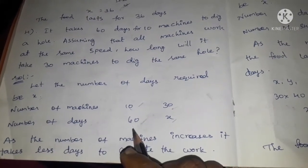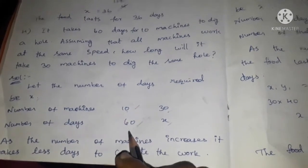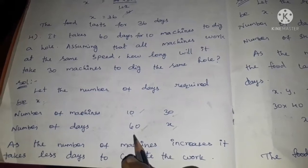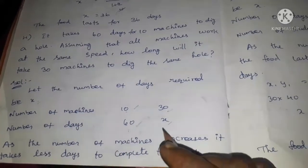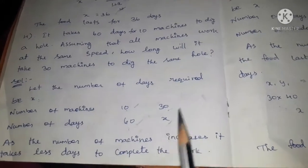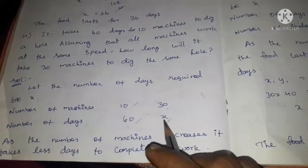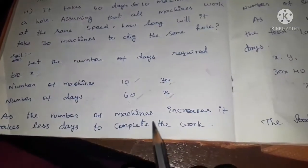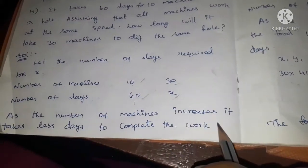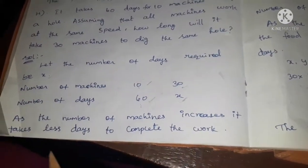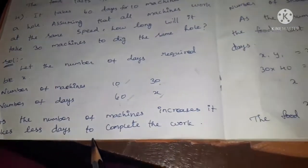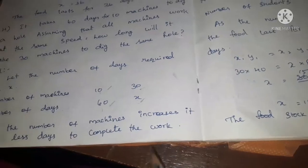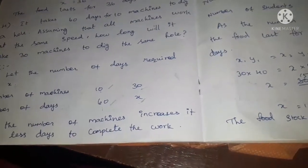10 machines take 60 days. As the number of machines increases, it takes fewer days to complete the work.